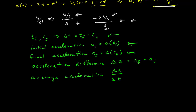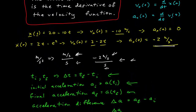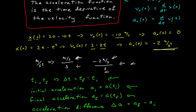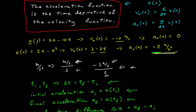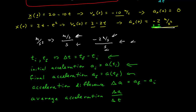The acceleration is a vector, like the velocity is a vector and the position is a vector. In one dimension, the magnitude of the vector is given by the number and the direction of the vector is given by the minus sign, just like the velocity and the position. And then the acceleration differences are also vectors as well.